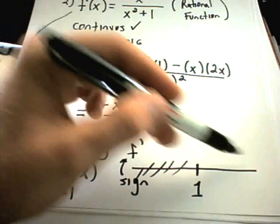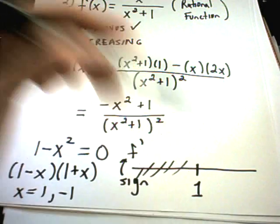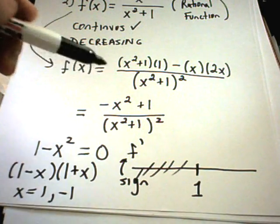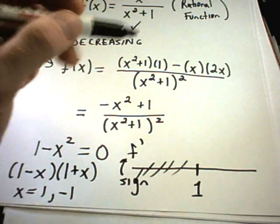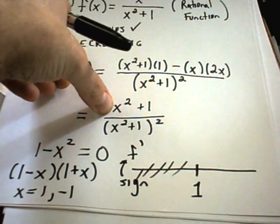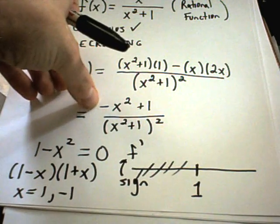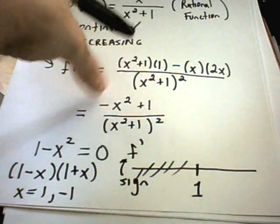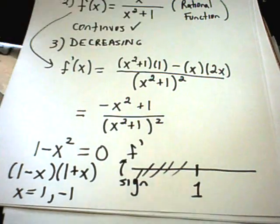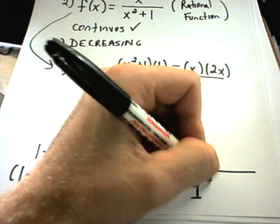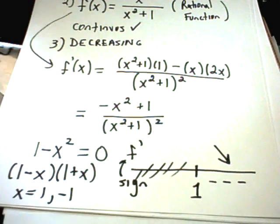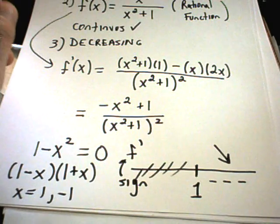You take a number larger than 1 and plug it into the derivative. If it's negative, it's decreasing; if it's positive, it's increasing. Maybe if I put 10 in - I square it first, I'll get 100, but then I'll get a negative 100 plus 1. So the top is certainly negative, and I'm squaring the bottom so that's positive. Definitely I'm going to get a negative number for bigger than 1, and that means that my function is, in fact, decreasing.